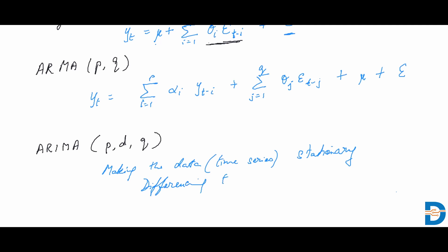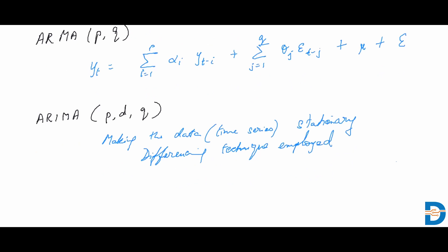The differencing technique employed where you can difference the time series with a certain order which we refer to as d. So if you're differencing the time series by just a single order, which is to say we are finding out the difference of consecutive observations and creating a new series, that becomes our time series.